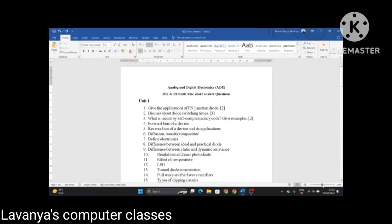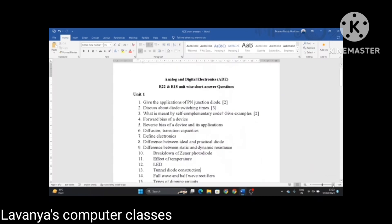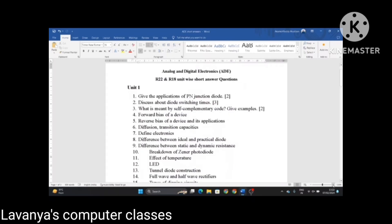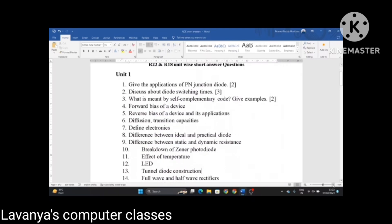Next question is, what is meant by self-complementary code? Give examples. Explain forward bias of a device, reverse bias of a device and its applications, diffusion and transition capacitances, define electronics.